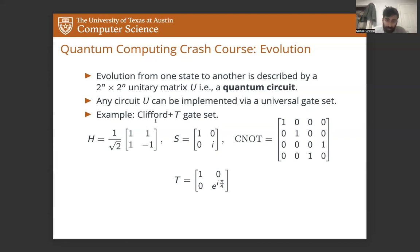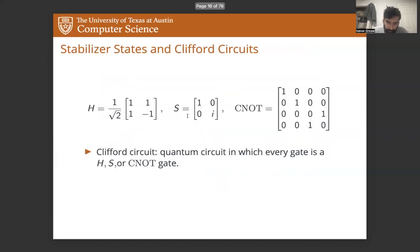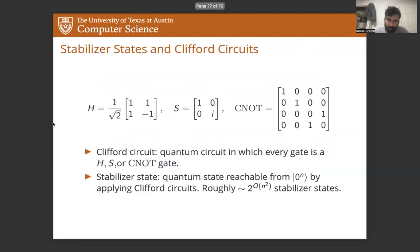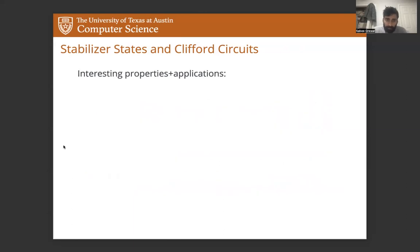So we're going to spend a little time talking about the Clifford and T gate set, starting with the Clifford gates. Any quantum circuit that's comprised entirely of Hadamard, phase, and CNOT gates is called a Clifford circuit. A quantum state that's reachable from the all zero basis state by applying Clifford circuits is called the stabilizer state. And there's roughly two to the N squared stabilizer states. The stabilizer states and Clifford circuits are very well studied classes of states and circuits.